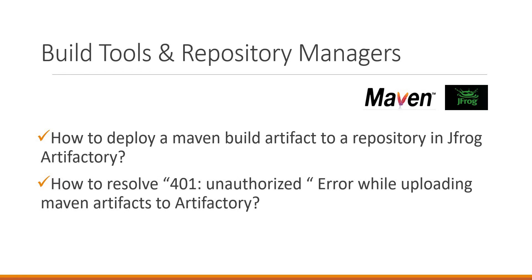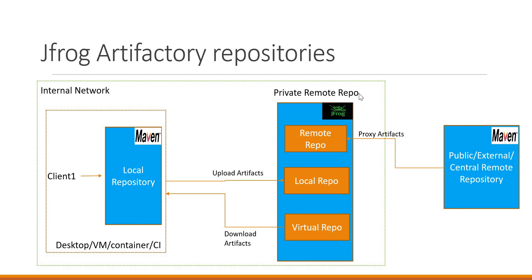In this video, we would see how to deploy a Maven built artifact to a repository in JFrog Artifactory, and also how to resolve the 401 unauthorized access error while uploading Maven artifacts to Artifactory. We already have seen what are the different types of repositories in Artifactory. We have three types: local repository, remote repository, and virtual repository. When we download artifacts we use virtual repositories, and when we upload artifacts we use local repositories.